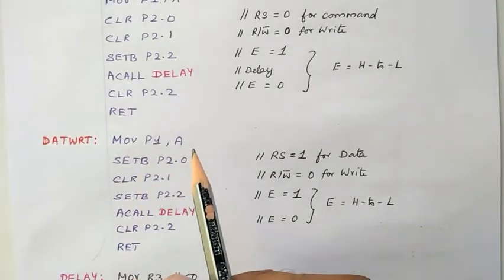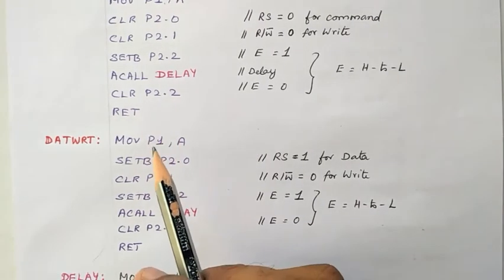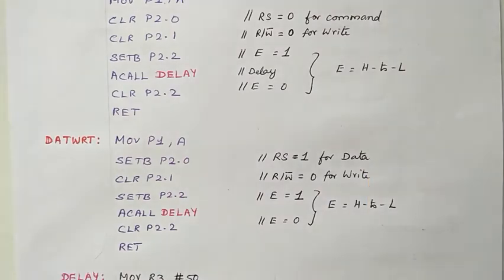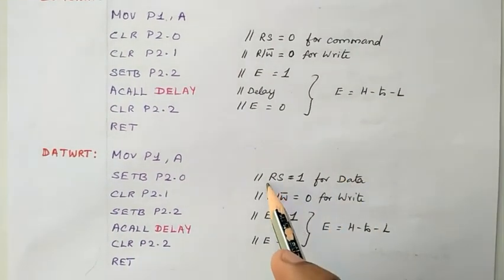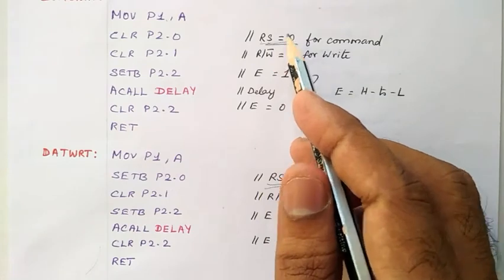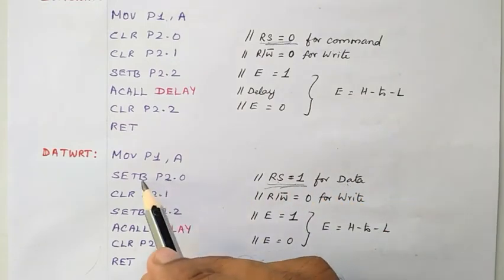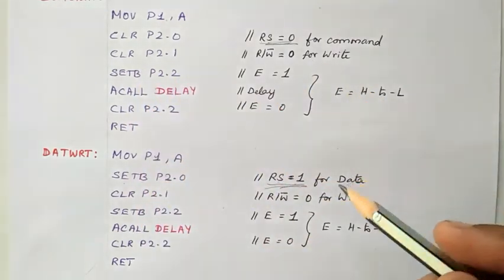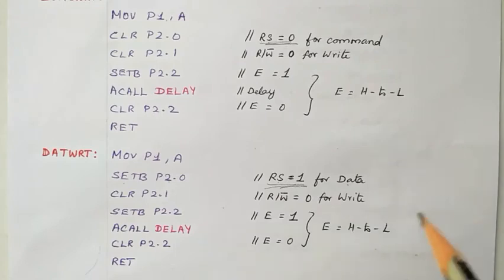In the data write subroutine, the character (e.g., 'G') is already in the accumulator and is moved to Port 1, which is connected to the data lines. The data must be latched into the LCD's data register. Unlike command write where RS is 0 (sending to the instruction register), here RS is made 1 (P2.0 set) to direct data to the data register. R/W bar is set to 0 for write operation (P2.1 cleared), and the enable pin is made high-to-low to latch the data into the data register.